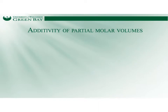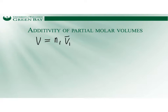A very important property of the partial molar volume is its additivity. Shown in equation form: if V is the total volume, then V equals N1 (number of moles of water) multiplied by V1-bar (partial molar volume of water), plus N2 (number of moles of ethanol) multiplied by V2-bar (partial molar volume of ethanol).